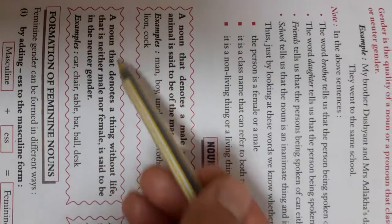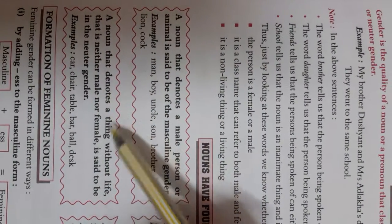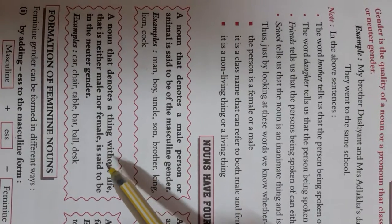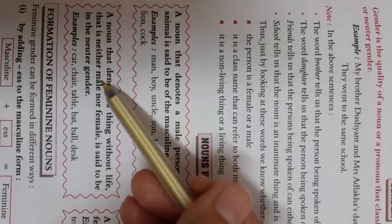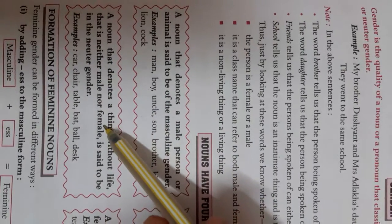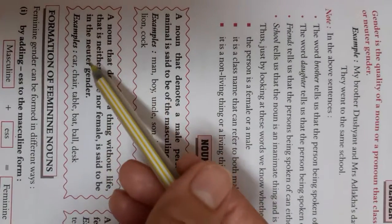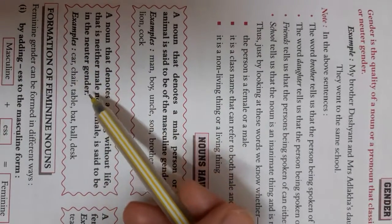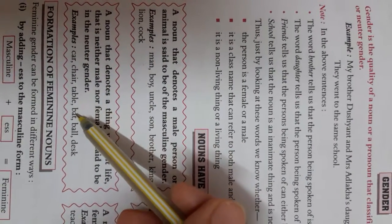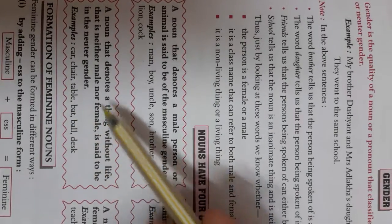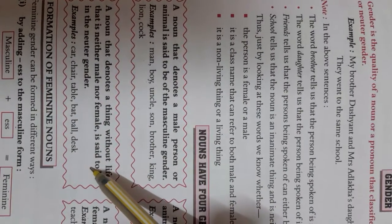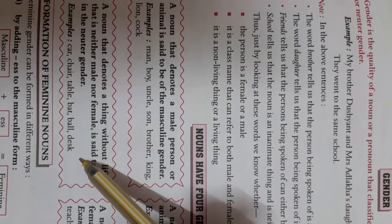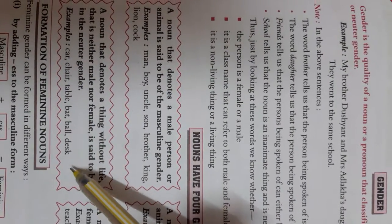A noun that denotes a thing without life — a thing without life that is neither male nor female — is said to be the neuter gender. Car, chair, table, bed, ball, desk — these are all things without life, neither male nor female. So this is the neuter gender.